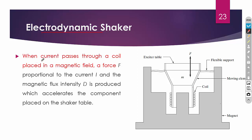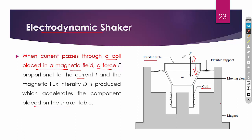The principle of the electrodynamic shaker is: when current passes through a coil placed in a magnetic field, a force F — proportional to the current and the magnetic flux intensity — is produced, which accelerates the component placed on the shaker table. The moving element wound by the coil is fixed to the exciter table, and the exciter table vibrates.